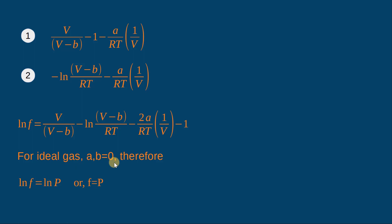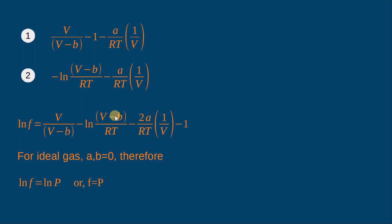It is interesting to note that for an ideal gas, a and b are both zero. Substituting this condition, the second-last term is zero, the first term becomes one, and one minus one is zero. The second term becomes -ln(V/RT), which is -ln(1/P) = ln P. Therefore for an ideal gas, ln f = ln P, or f = P. This is the argument we used when introducing the reference condition for fugacity.